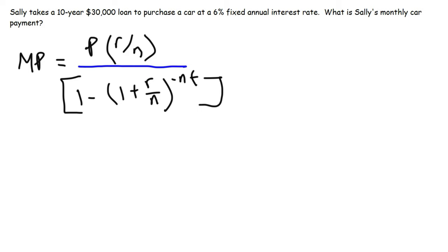Let's write down what we know. We know the principal of the loan is $30,000. Now Sally didn't put any money down, so this is just the beginning balance of the loan. The annual interest rate is 6%. Now we need to convert 6% to a decimal. In order to do that, divide by 100: 6% divided by 100 is 0.06, so that's what we need to plug in for our r value.